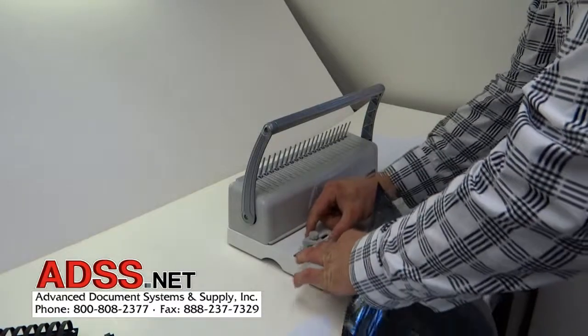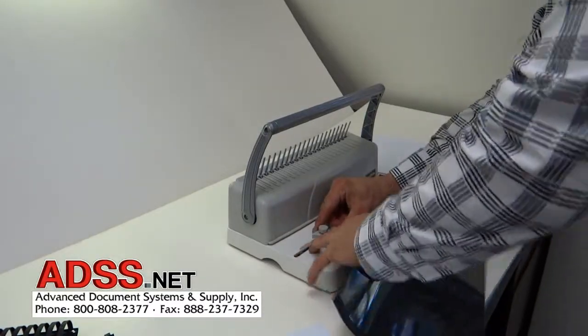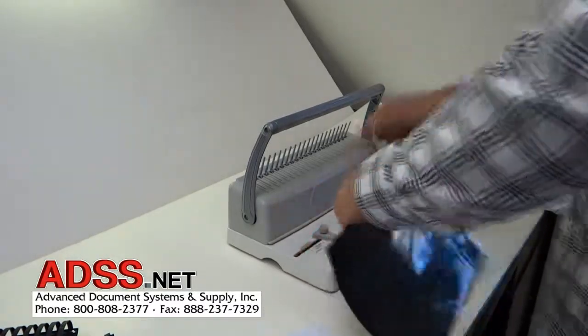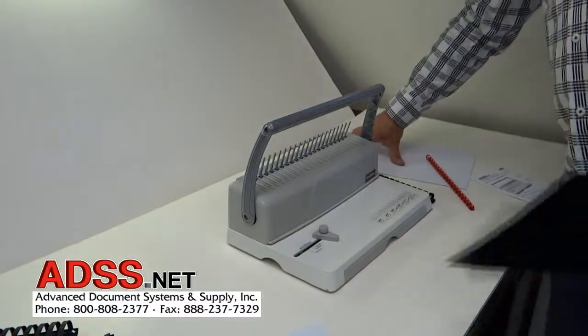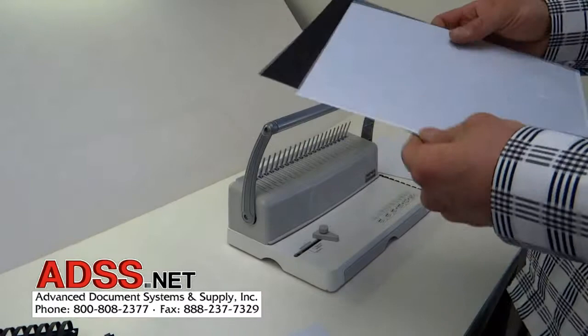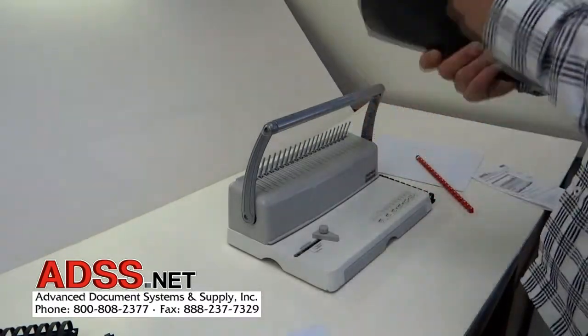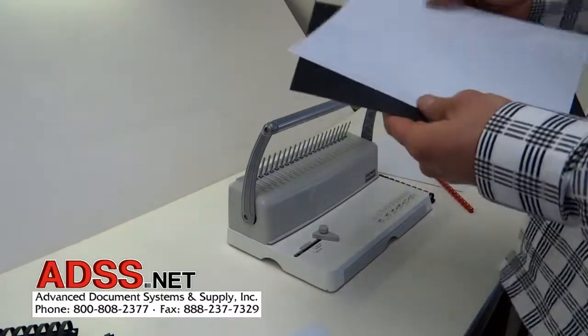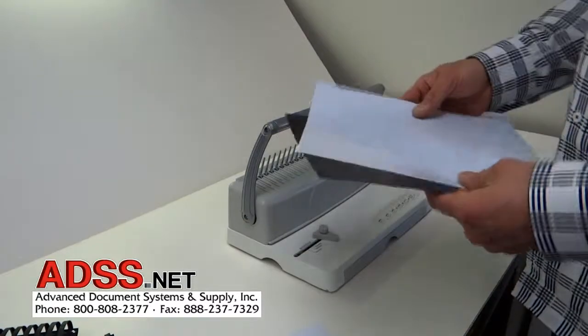We're going to adjust this guide real quick and we're going to do more of a portrait style, or we're going to do the eight and a half inch side. Now when you're punching clear covers, we have a cover, so we're going to punch a lesser amount of sheets.